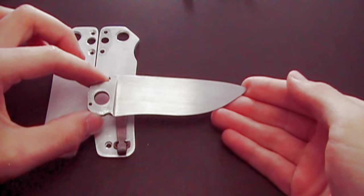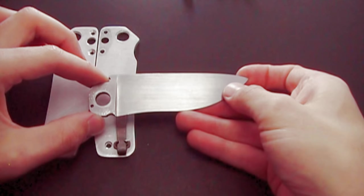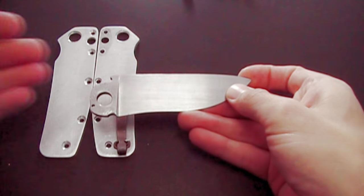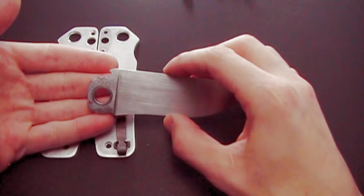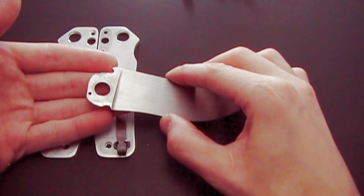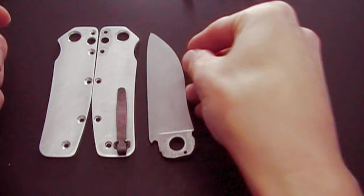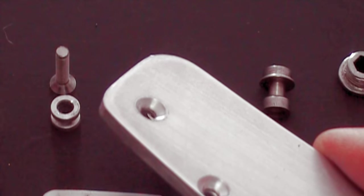This is the part of the video where I explained all of the problems I had and things that I learned. If you're going to make a folding knife, particularly a button lock, there are some things to consider before you start.